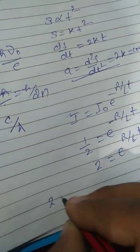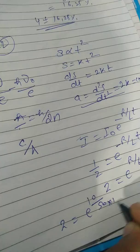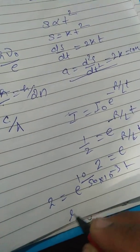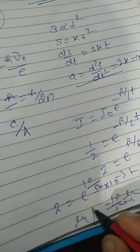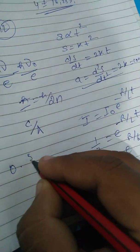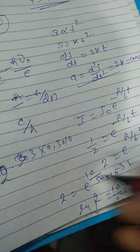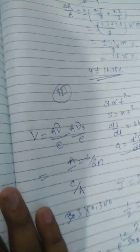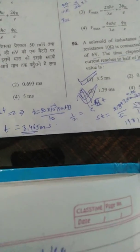Taking the reciprocal, 2 = e^(R/L·t). With R = 10 ohm and L = 50 millihenry, taking log on both sides: 2.303 × log 2 = (10/50×10⁻³) × t. Since log 2 = 0.301, solving gives t = 3.465 milliseconds. So option number 1 is correct.